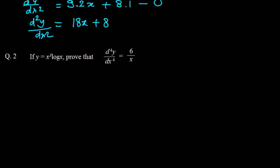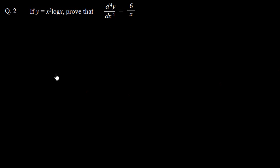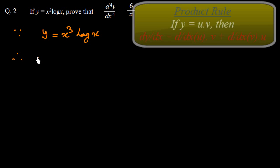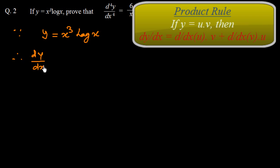Now question number two: y = x³·log x. Prove that d⁴y/dx⁴ = 6/x. We start by finding the first derivative. Since y = x³·log x is a product, we use the product rule. dy/dx = (d/dx of x³)·log x + (d/dx of log x)·x³.